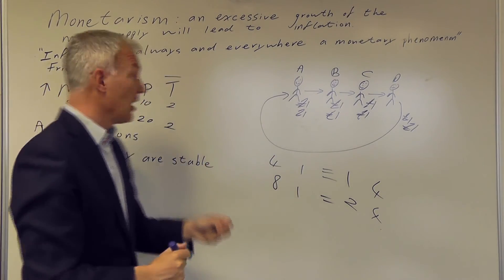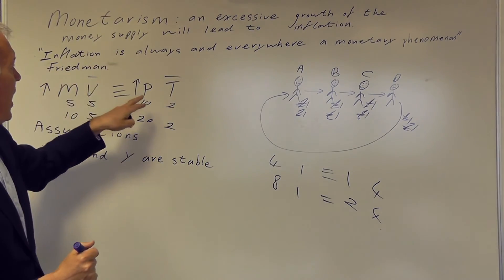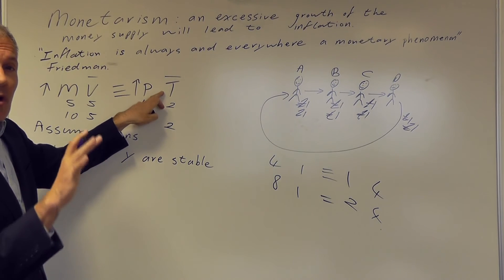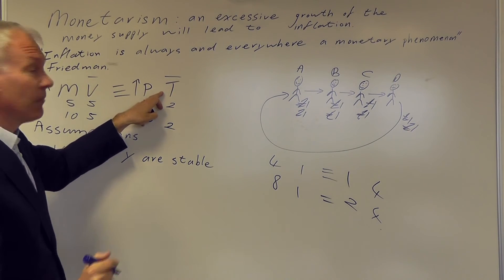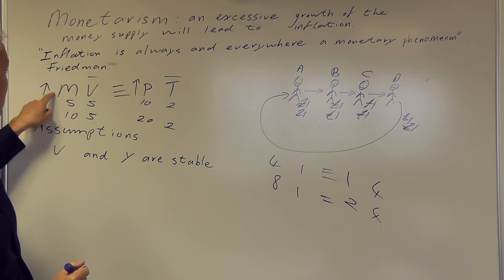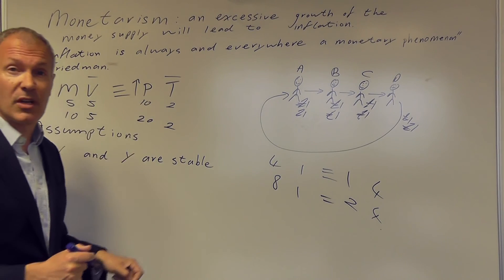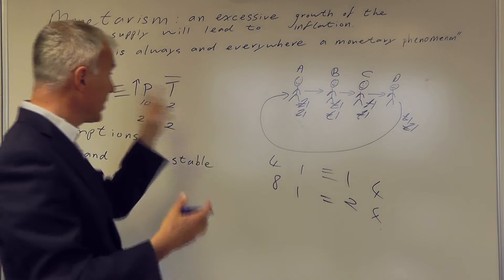So it's a simple theory. It's assuming that V and T are relatively constant, are stable over time. And therefore increases in M, the money supply, if they're excessive, will result in increase in the price level. And modern monetarism is based on this equation.